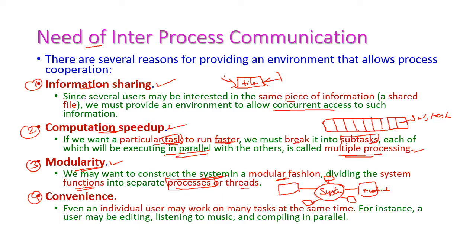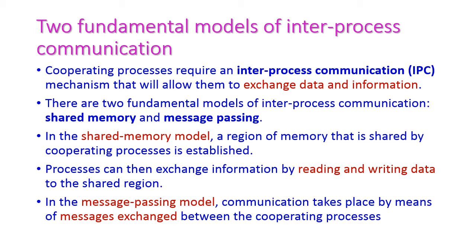The fourth reason is convenience. Convenience means an individual user can execute more number of tasks at a time. For example, the user may use a document file, use a media player for listening to music, and compile a Java program or any other program in parallel. So we need to create a convenient environment for the users. These are the needs for inter-process communication.